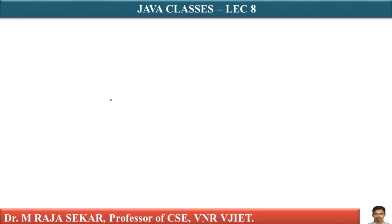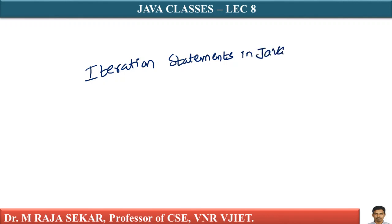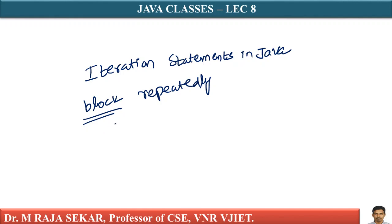In this lecture we will try to understand iteration statements in Java programming language. Iteration statements execute a block of code repeatedly until a condition is met. The various iteration statements of Java programming language are: while, do-while, and for.